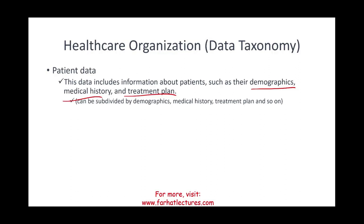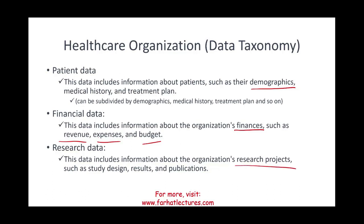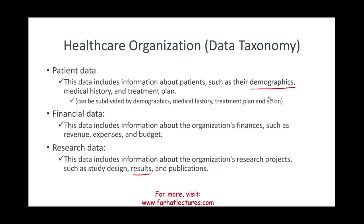This patient data could be subdivided by demographics — for example, patient demographics for New York City, patient demographics for Philadelphia, and so forth. We could also break it down by medical history — for instance, by how many years a patient has been with us. We could have financial data, which includes the organization's revenues, expenses, and budget. We could also have research data, which includes information about the organization's research projects, study design, results, and publications.